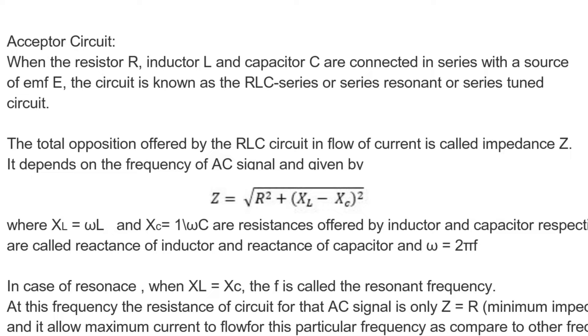At this frequency, the resistance of circuit for the AC signal is having the minimum impedance where XL and XC cancel out each other and square root of R cancel with the square of R. So Z is only equal to R. And at this frequency, the current is maximum as compared to other frequencies which have the larger impedance than this particular signal.